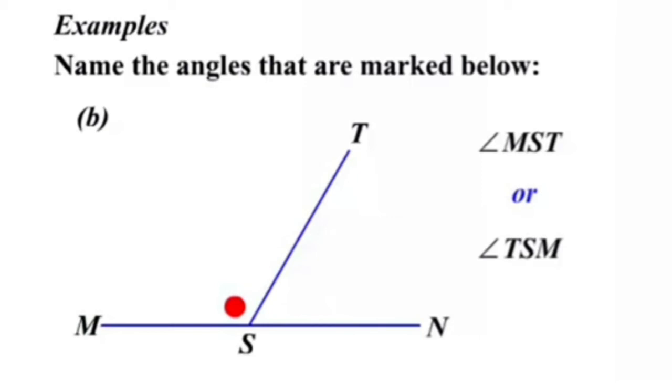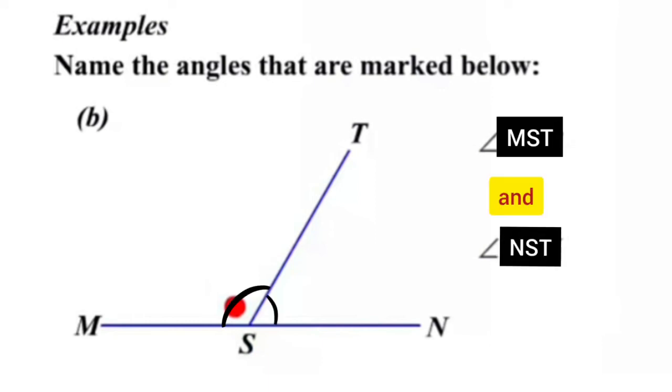If you look at the original figure, now this angle cannot be written as angle S. Since this vertex S does not have just one angle. Here you can see the vertex S is for angle MST and is also for angle NST. So, it is always better to write the name of the angle using three letters. This one letter notation to name the angle is convenient but it is not preferable. In this figure, we have two angles, angle MST and angle NST.